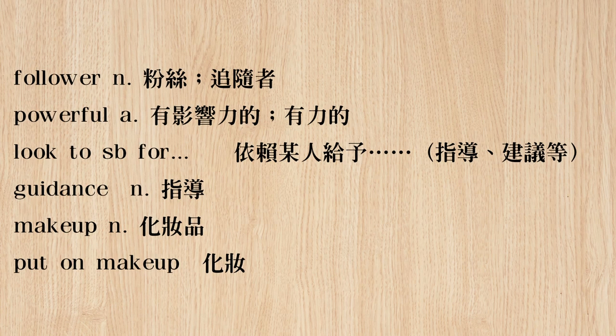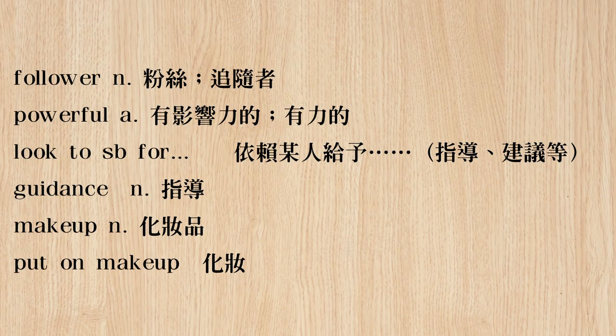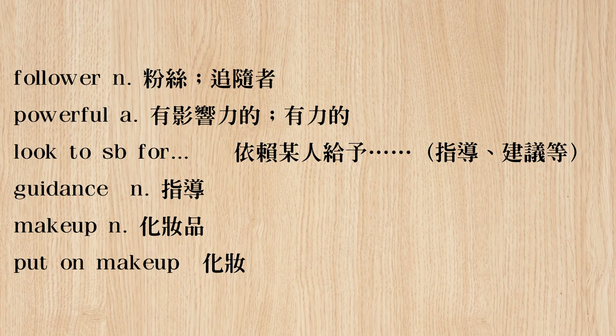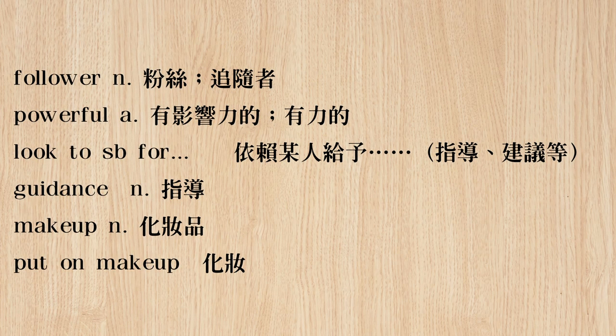A 'stalker' — S-T-A-L-K-E-R — is a negative kind of follower, 有点变态的那种追踪者。 'Powerful' can mean physical strength or influence — 很强大，很有影响力。 'Look to someone for something' means 仰赖某个人给你什么东西。 'Guidance' here means 引导指导的意思。 Makeup — the verb is 'put on makeup'. That ends our review section. Thank you for joining us today — we'll see you tomorrow. Bye!